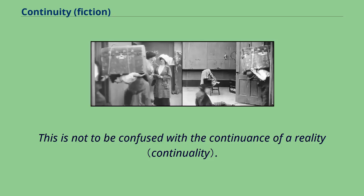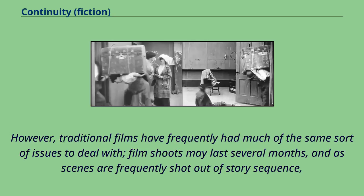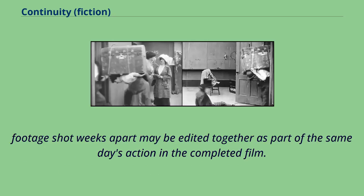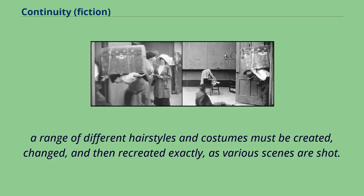Television programs like 24, in which actors have to appear as if it is the same day for 24 consecutive episodes, have raised public recognition of continuity. However, traditional films have frequently had much of the same sort of issues to deal with. Film shoots may last several months, and as scenes are frequently shot out of story sequence, footage shot weeks apart may be edited together as part of the same day's action in the completed film. In some ways, 24 presents a simpler situation, as costumes and hairstyles generally should not change very frequently. In many feature films, a range of different hairstyles and costumes must be created, changed, and then recreated exactly as various scenes are shot.